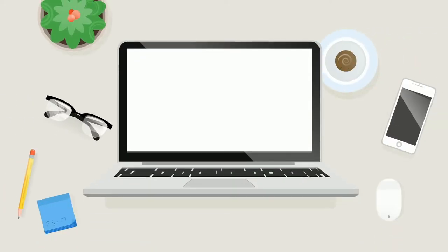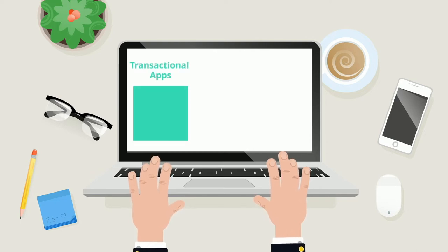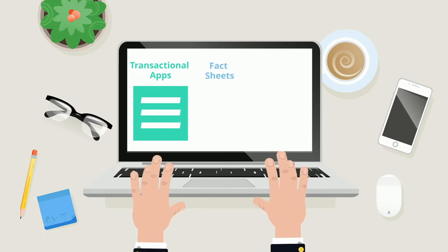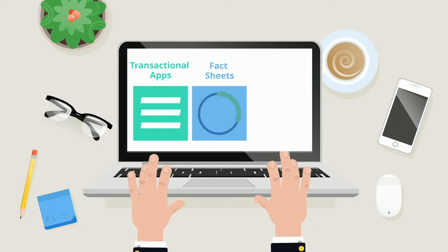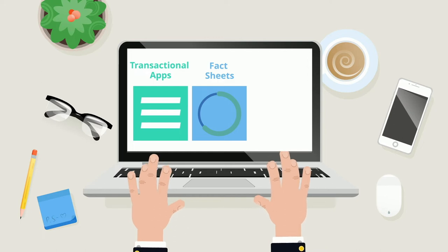SAP Fiori offers three different types of applications. First, there are the transactional apps, which allow you to execute a business process such as creating a production order or a purchase order. Then there are the fact sheets, which allow you to display the main information about a particular object such as a supplier or a customer. Finally, there are the analytic apps, which allow you to create graphs and statistics.